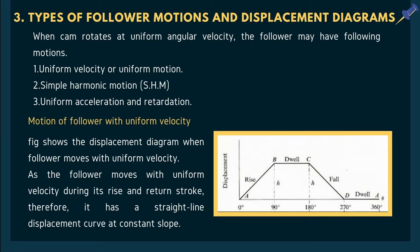When the cam rotates at angular velocity, the follower may have one of three types of motion: uniform velocity, simple harmonic motion (SHM), or uniform acceleration and retardation. In the displacement diagram for uniform velocity, the x-axis represents cam angle and y-axis represents follower displacement. The slope is constant; lines BC and DA show dwell periods with no follower motion, while lines AB and CD represent rise and return strokes with uniform velocity.